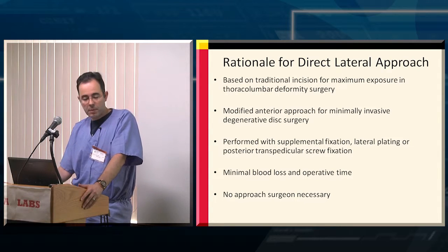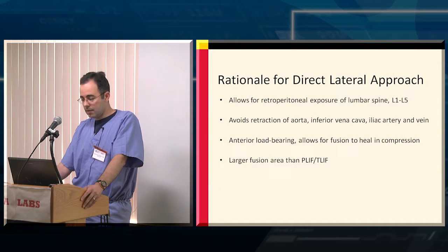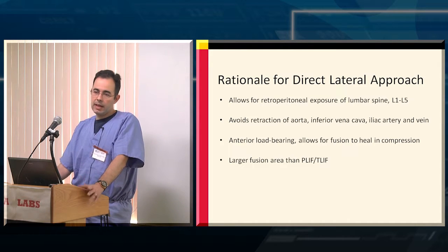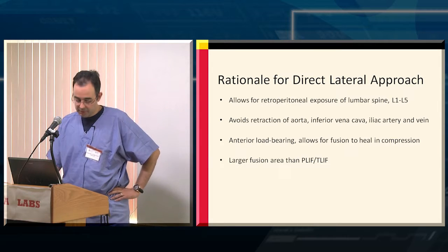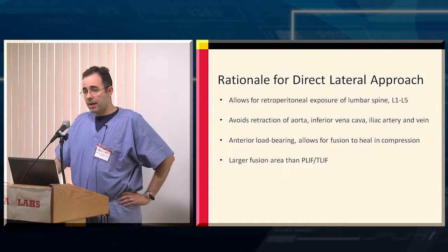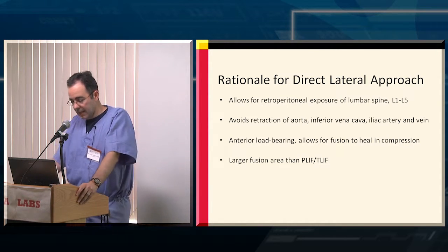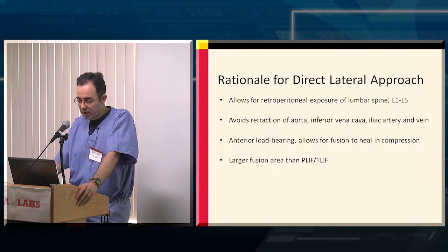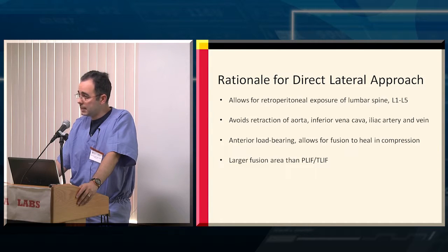One of the other benefits is minimal blood loss and operative time. The lack of a need for an approach surgeon can certainly be useful. The direct lateral approach is going to be L1 to L5, and you can actually go higher in the thoracic spine as well. One benefit when comparing it to anterior surgery is avoiding retraction of the great vessels, and you have the opportunity for anterior load bearing for better fusion.